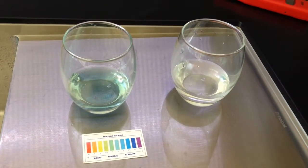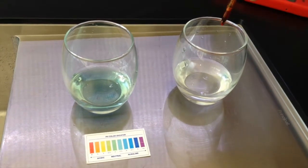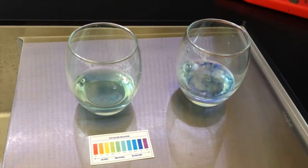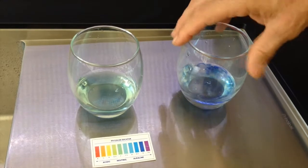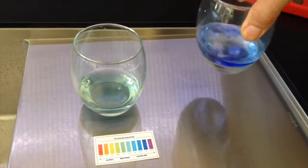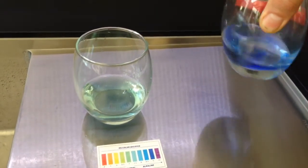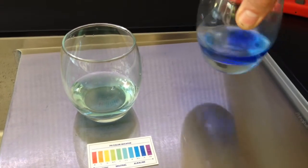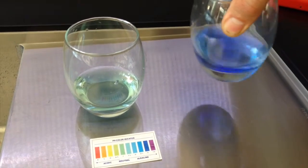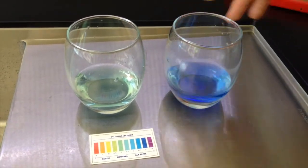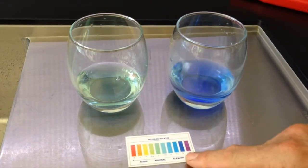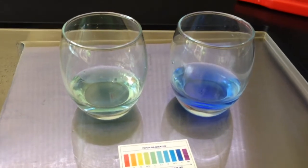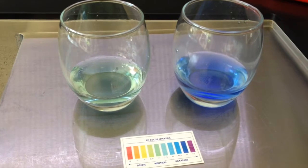Now we're going to put the same amount of pH reagent in the Mineral Plus water and see what happens with the change of color. You can see it's a much, much bluer color and it's coming out somewhere around about between an 8.5 and 9.